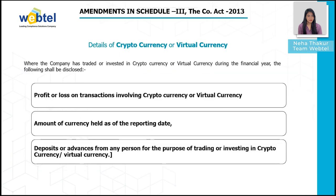The next amendment covers details of cryptocurrency or virtual currency. Where the company has traded in or invested in cryptocurrency or virtual currency during the financial year, the following shall be disclosed: profit or loss on transactions involving cryptocurrency or virtual currency, amount of currency held as at the reporting date, and deposits or advances received from any person for the purpose of trading or investing in cryptocurrency or virtual currency.